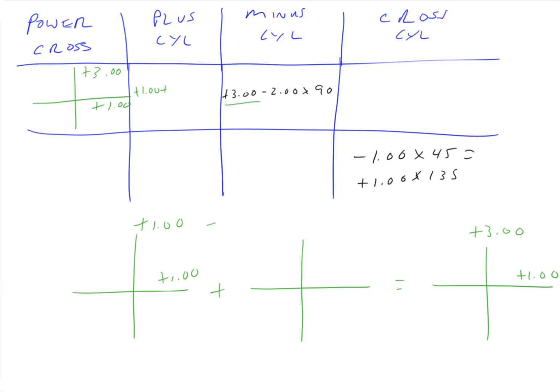Okay, and the smallest number is plus one, that's our spherical lens. And then what do we need to add to plus one to get plus three? Plus two. What do we need to add to plus one to get plus one? Plano. So we have a plus one sphere, and now this is plus two. What's the axis? 180. Plus two axis 180.